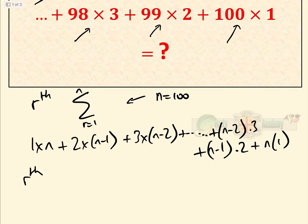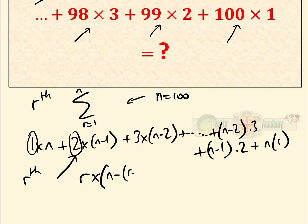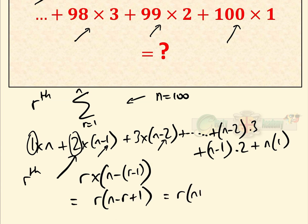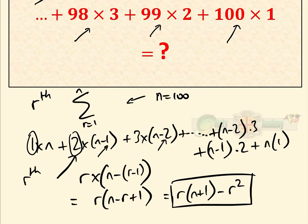The rth term is r × (n − r + 1), because the first factor is r, and the second term is n−1, the third is n−2, etc. That expands to r(n+1) − r², which is our rth term.